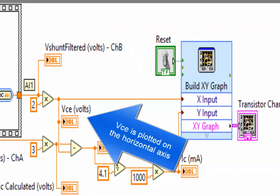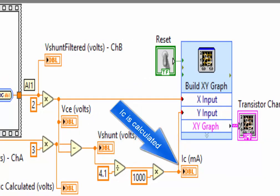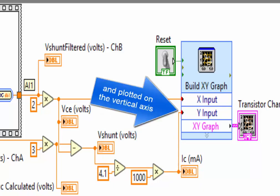The collector-emitter voltage is plotted on the horizontal axis. The collector current is calculated and plotted on the vertical axis.